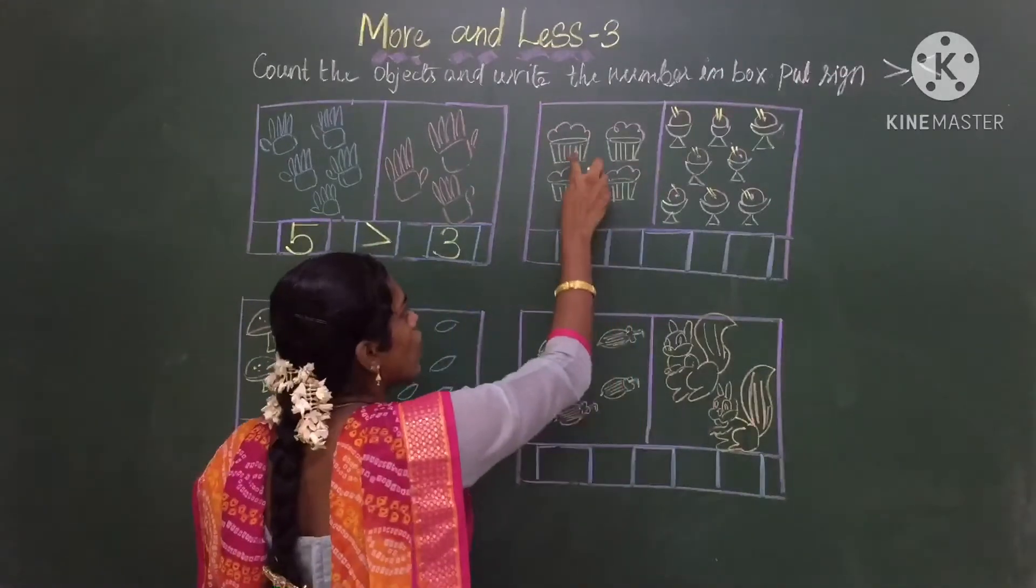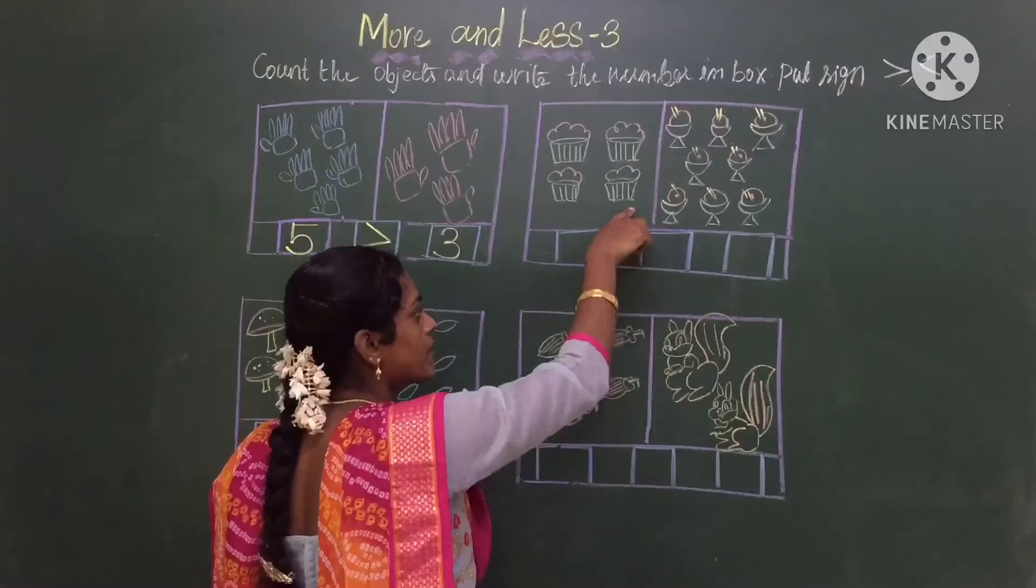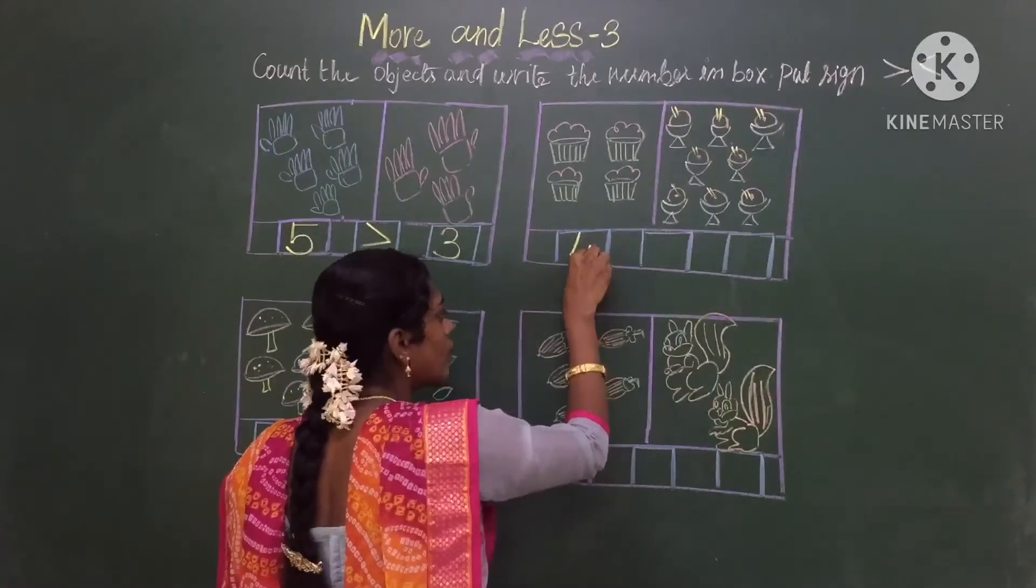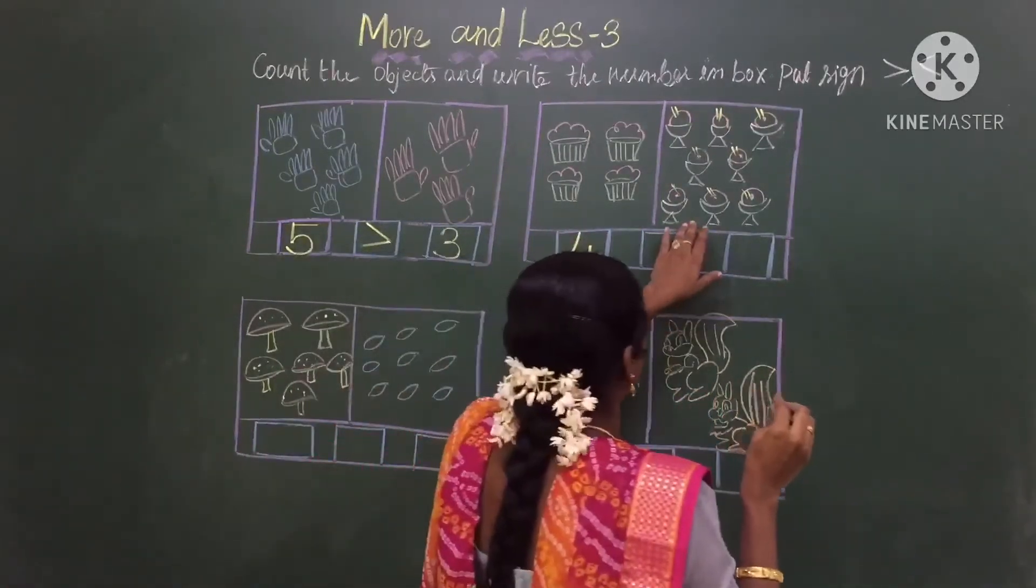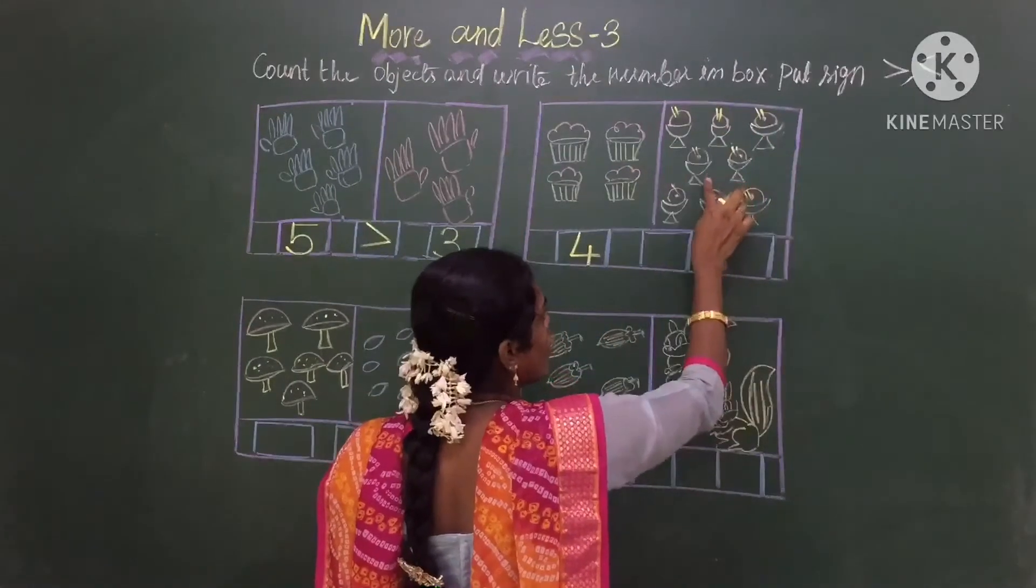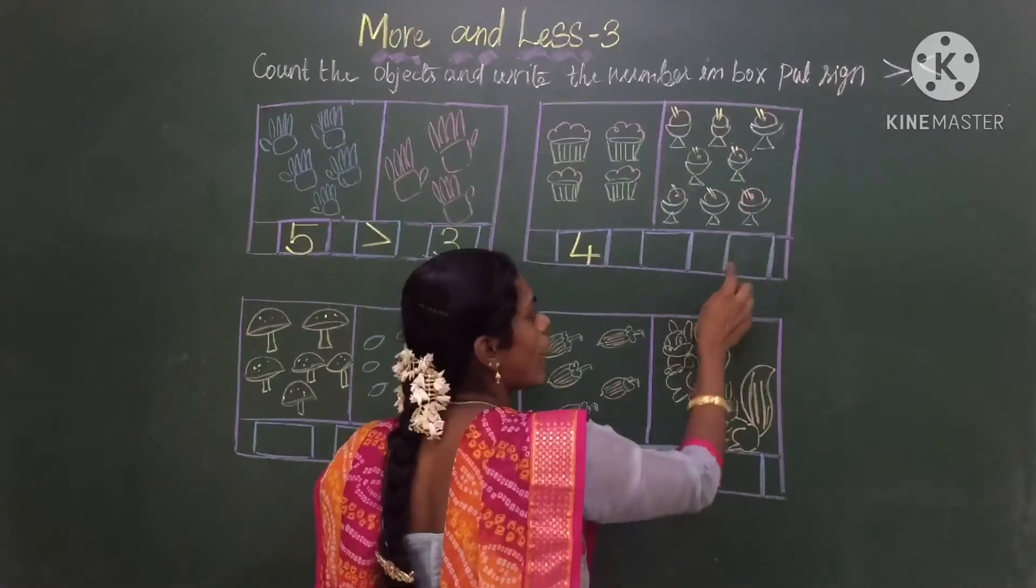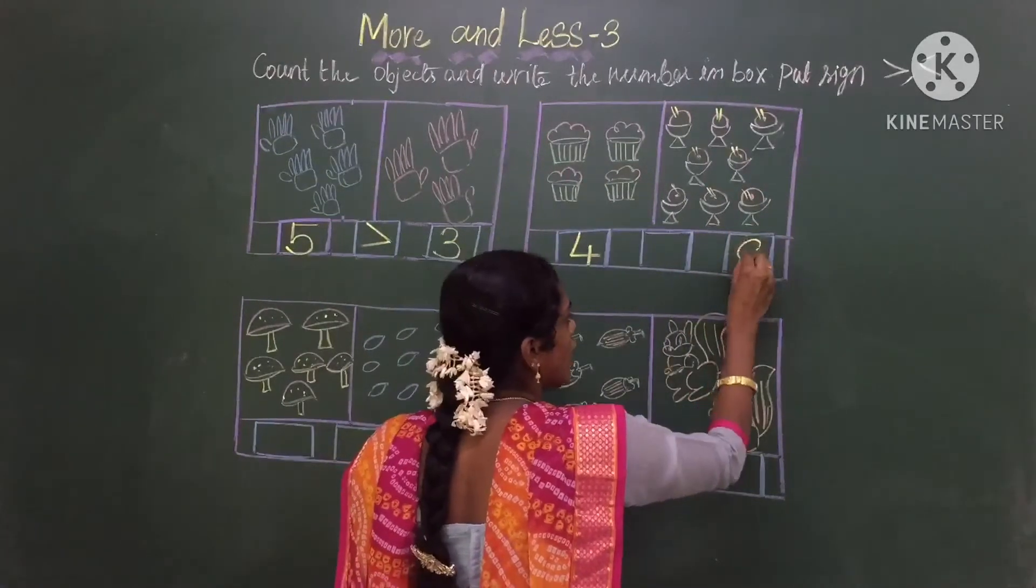We will count the cupcakes: 1, 2, 3, 4. How many cupcakes are there? 4. So I will write in the box number 4. Now let us count the ice cream: 1, 2, 3, 4, 5, 6, 7, 8. So I will write in the box 8.